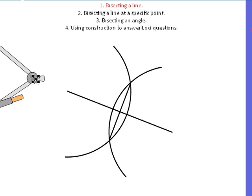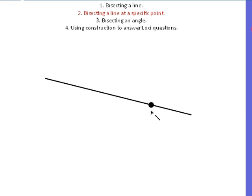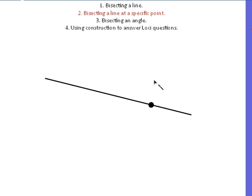The other type of question you might get is to bisect a line at a specific point. As you can see, there's a dot here on the line, and in the exam they'll always tell you where they want you to bisect the line. Now, obviously, if you're bisecting the line at a point you're not cutting exactly in half — what you will do is create a 90 degree angle here when you draw your bisect up. That's what they're looking for.